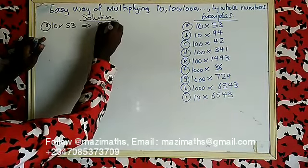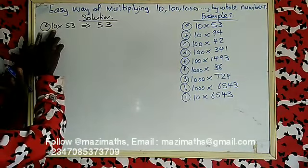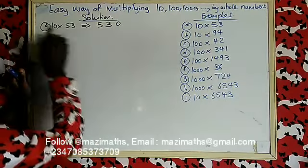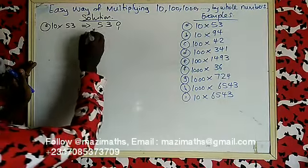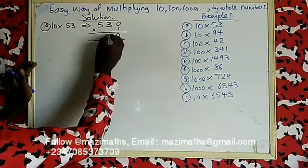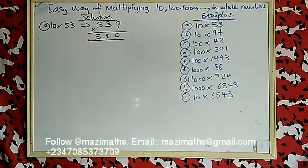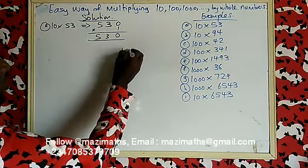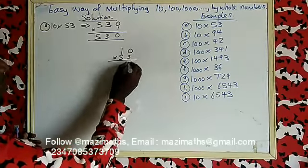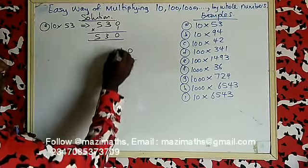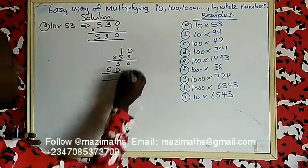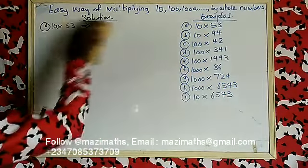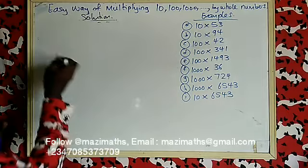Write 53 first. How many zeros are there in 10? Only one zero — just put that zero here. Then multiply: one times zero is zero, one times three is three, one times five is five. So your answer is 530. This is faster than the normal long multiplication method, but you get the same answer.